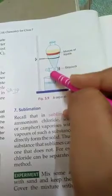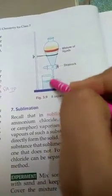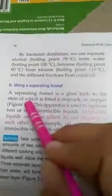We will have to take it and put it on the liquid in the form of drops. It will fall down. A separating funnel is a glass bulb to the stem which is fitted to a stopcock. Stopcock, you have seen.